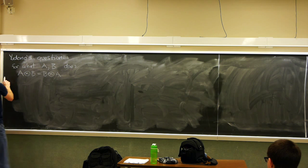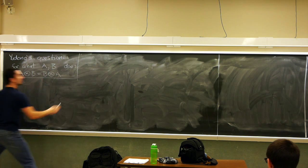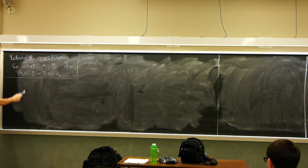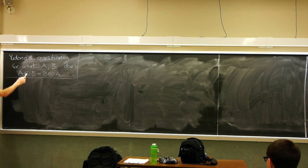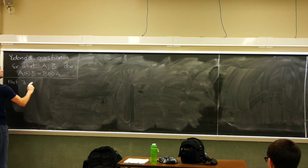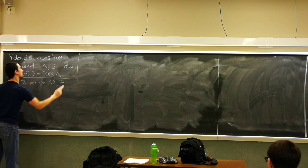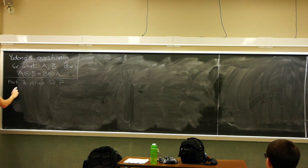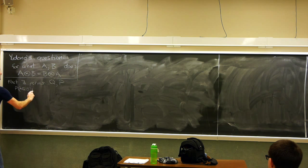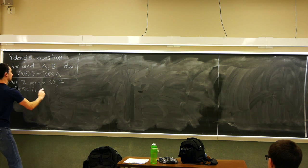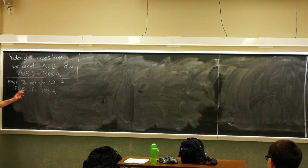We went over the fact last time that for any matrices A and B, when you make their tensor product, it's always the case that there exist permutations Q and P of appropriate dimensions such that you can get the commuted tensor product.